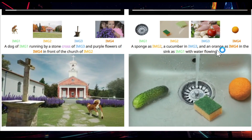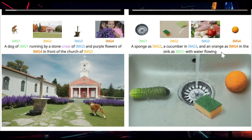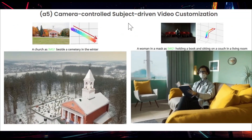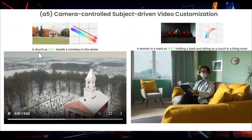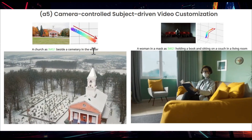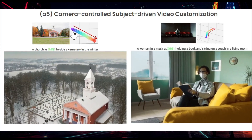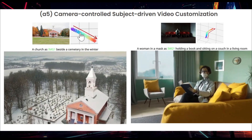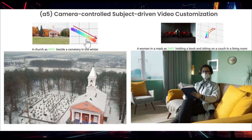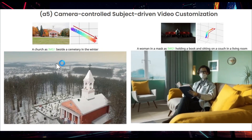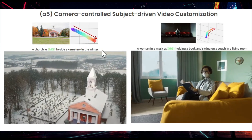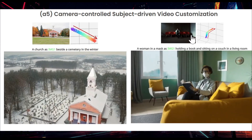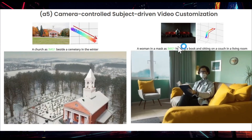Here are two more examples: image one is a dog, combined with a church and stone pavement with flowers. There's also another option called camera control subject-driven video. You can see a church image beside a symmetrical winter scene, and there are options to manually change the camera control direction.